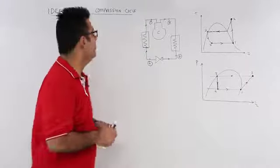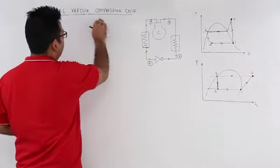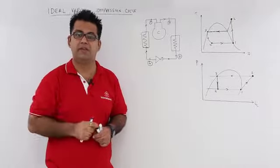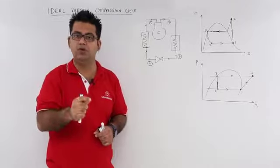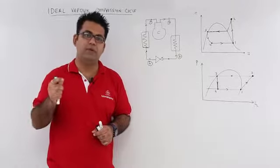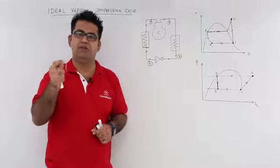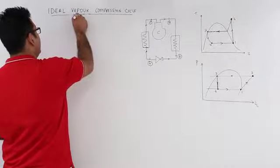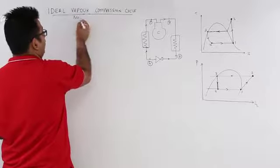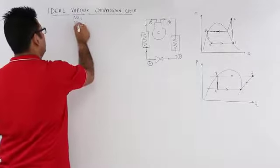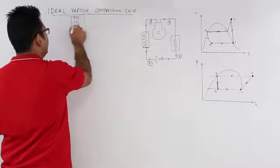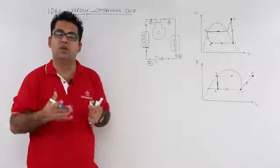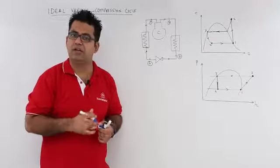In this video we will start discussing the ideal vapour compression cycle. In the previous videos we looked at air refrigeration cycles in which the working fluid was air, but here we will be using vapours of a gas — that could be ammonia, CO2, or any other gas — and we will be compressing those vapours to create the refrigeration effect.